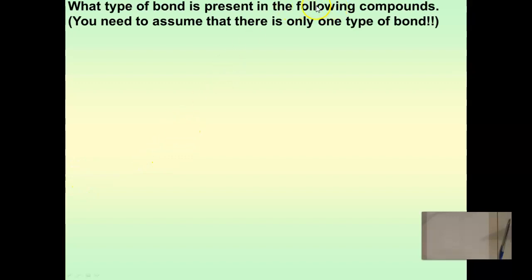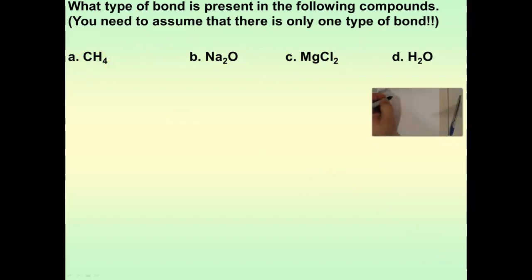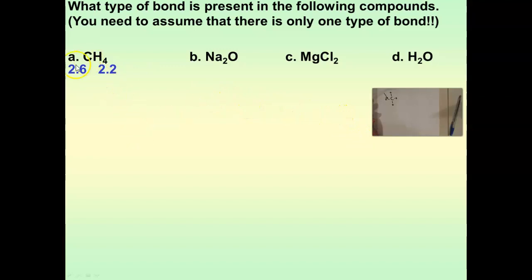Another way I'll ask this question is: what type of bond is in the following compounds? For CH4, there's only one type of bond — carbon to hydrogen. We take that bond and subtract the electronegativities: carbon is 2.6, hydrogen is 2.2. Subtract them and we get 0.4, which is a polar covalent bond. The fact that there are three other bonds doesn't matter — they're all the same type.